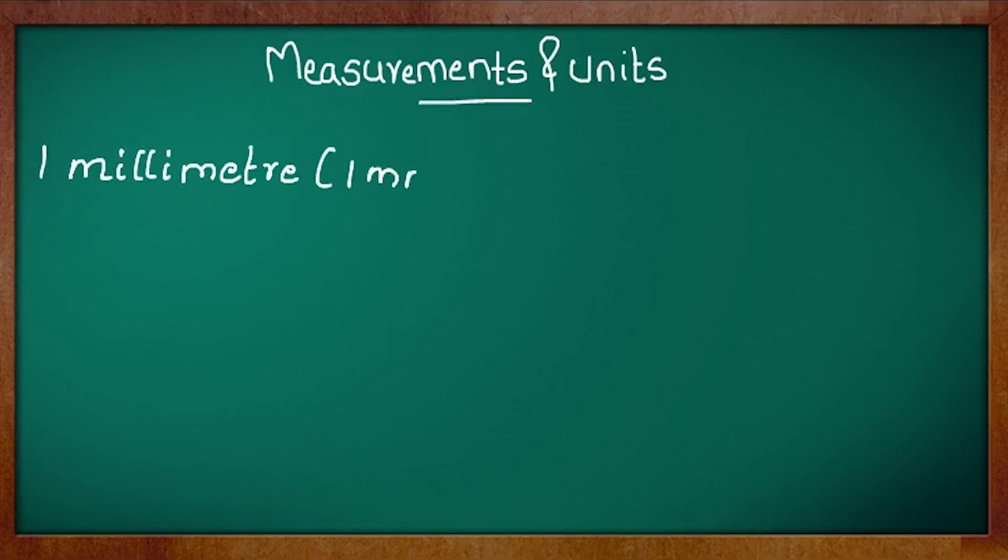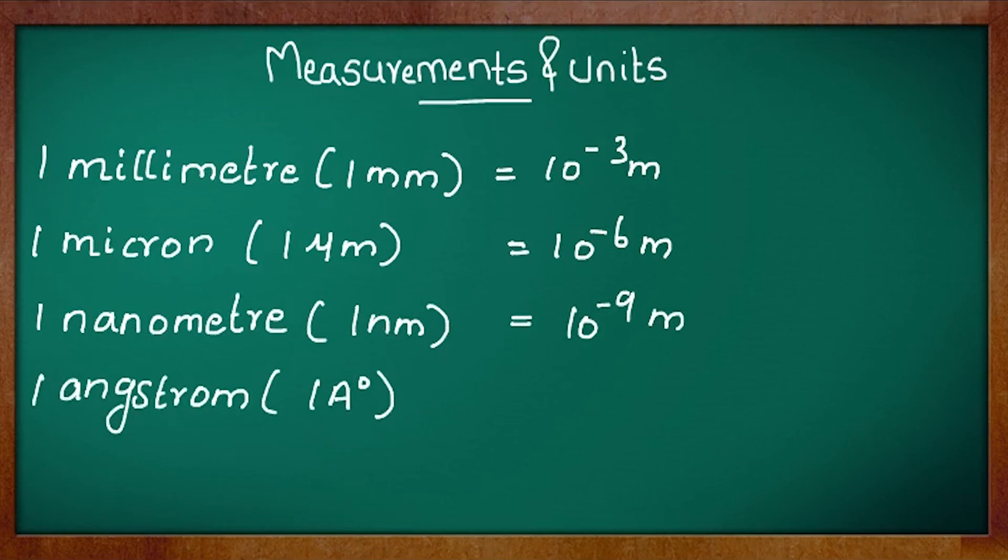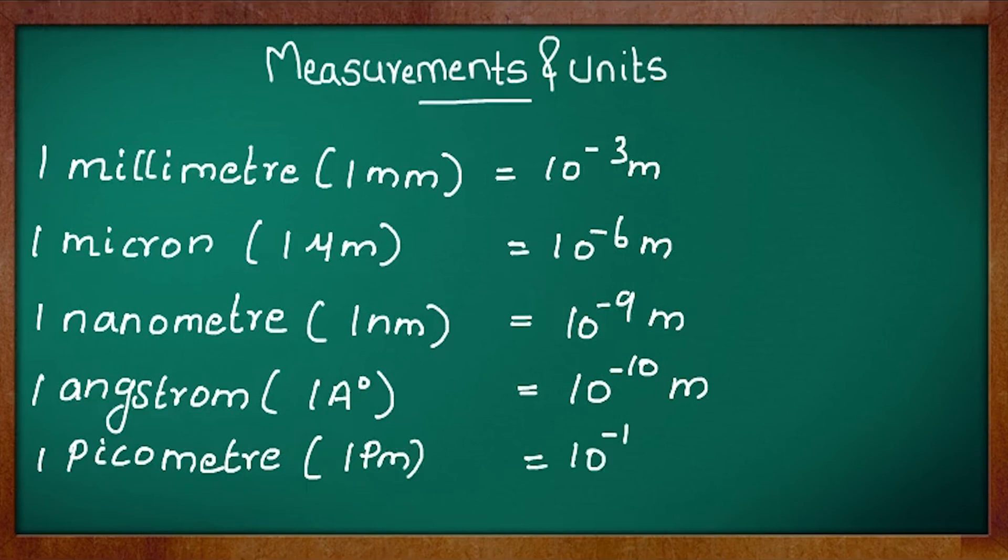1 millimeter equals 10^-3 meter, 1 micron equals 10^-6 meter, 1 nanometer equals 10^-9 meter, 1 angstrom equals 10^-10 meter, 1 picometer equals 10^-12 meter, and 1 fermi equals 10^-15 meter.